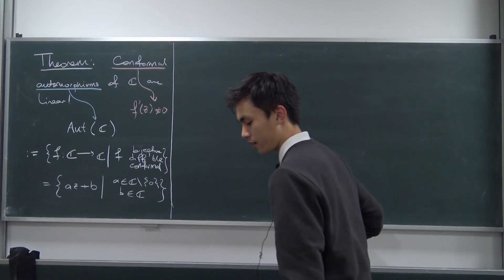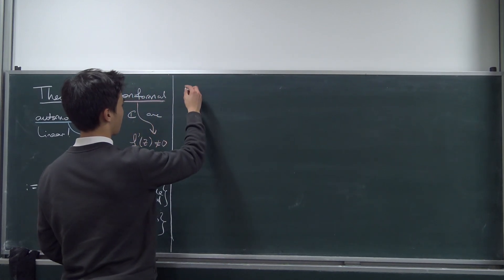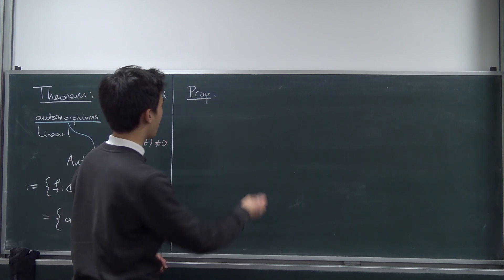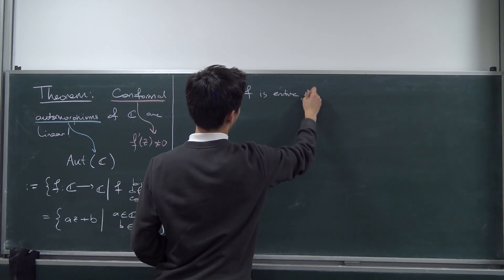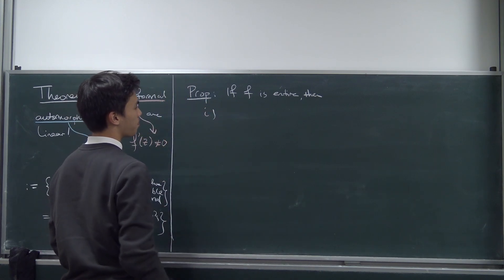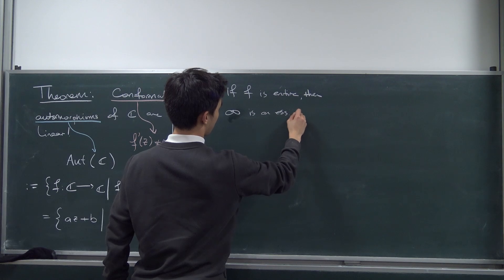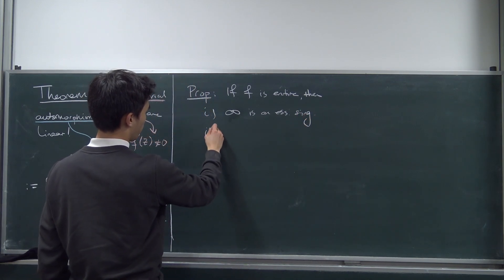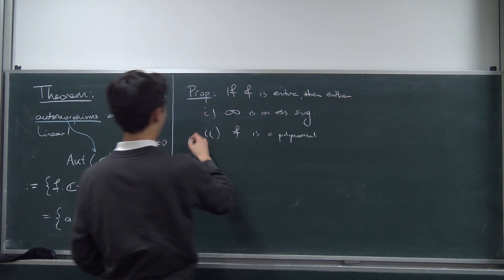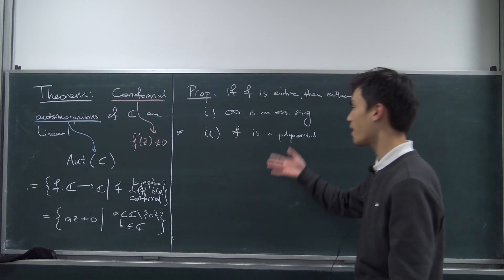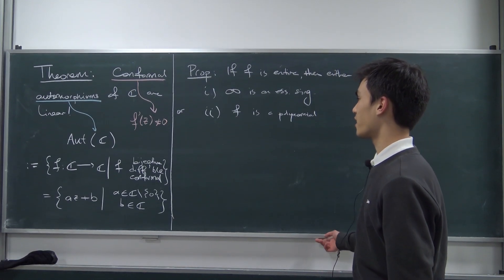Now, how on earth do we go about proving this theorem? We need a little proposition to help us. It says: if F is an entire function, then either F has an essential singularity at infinity, or F is simply a polynomial. These two cases are mutually exclusive — you either have infinity as an essential singularity, or your function is exactly a polynomial. This is going to help us because we want to show that these functions are polynomials and eliminate the possibility of essential singularities.